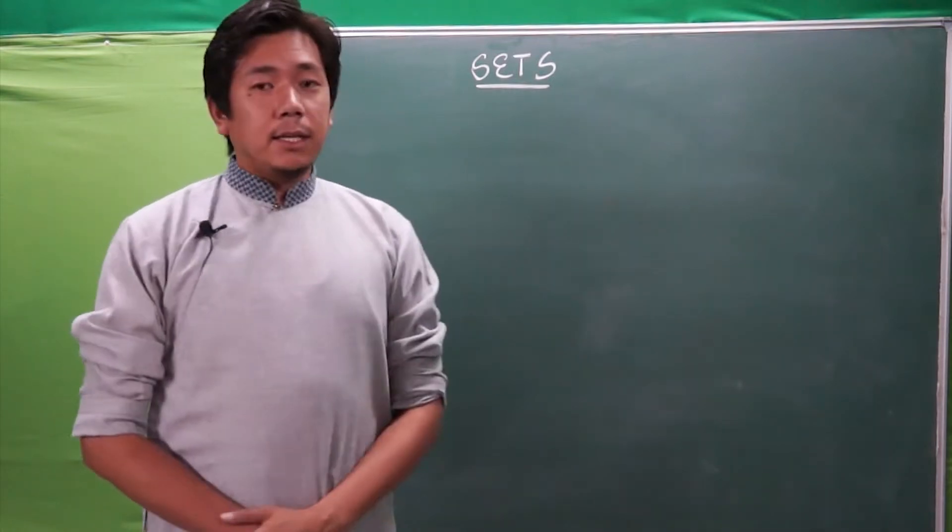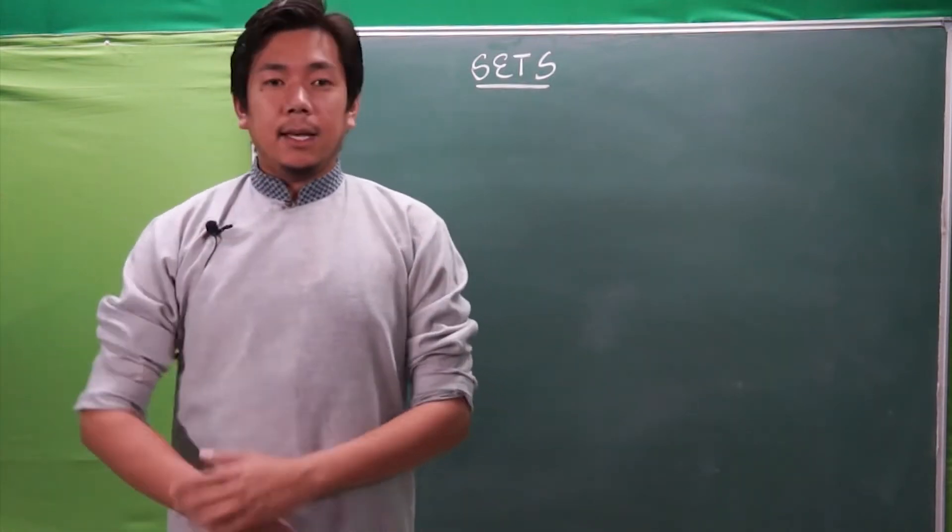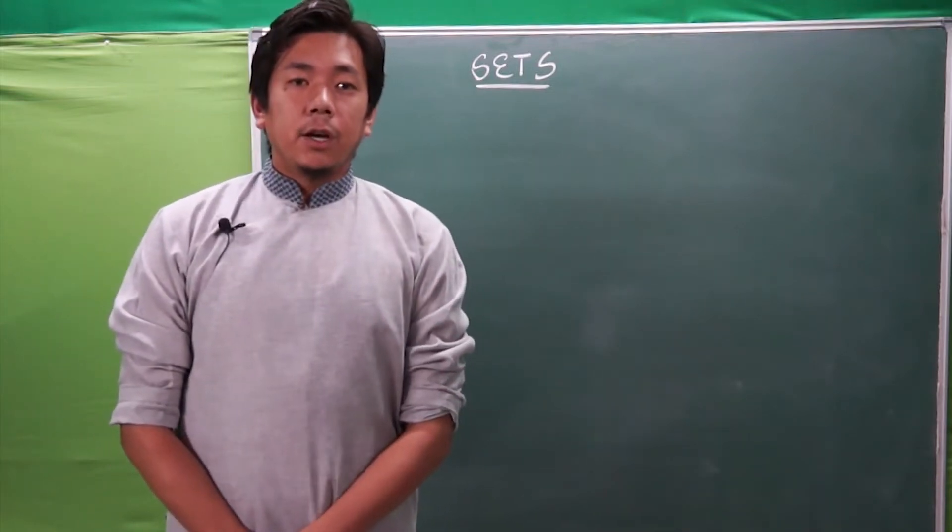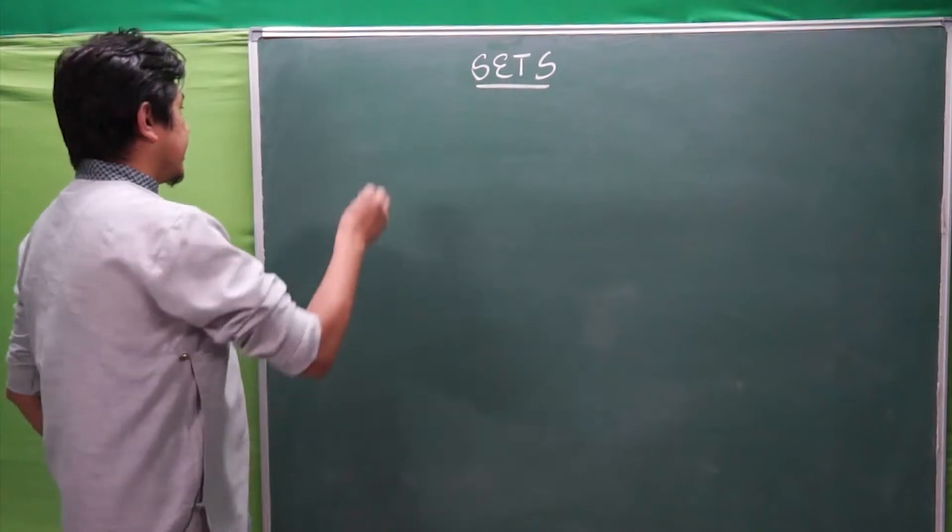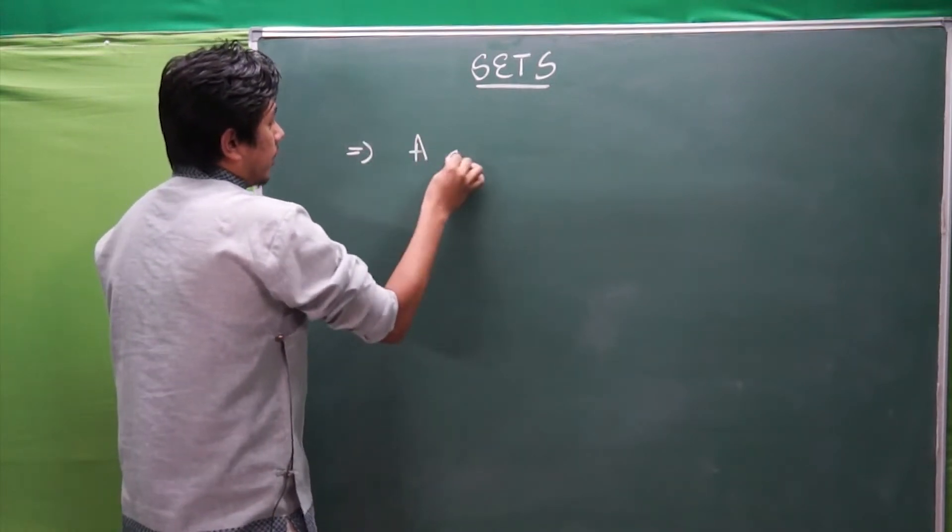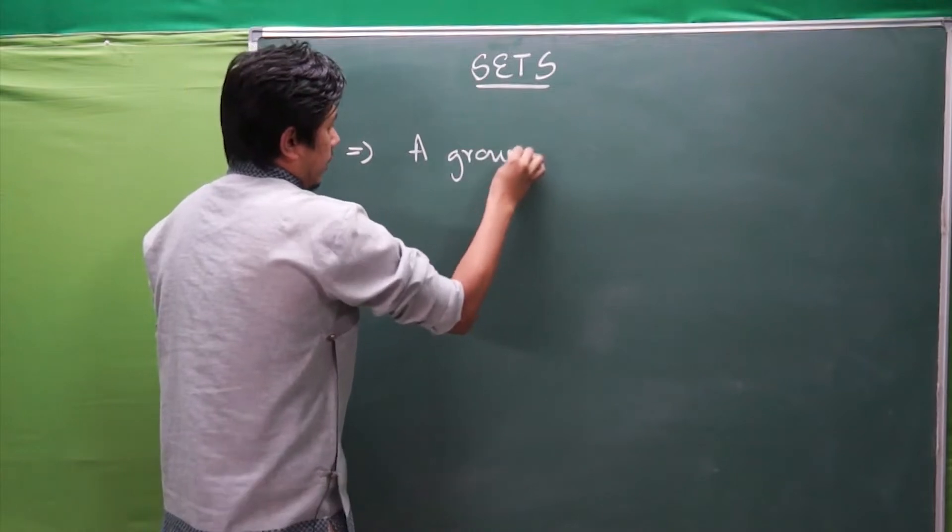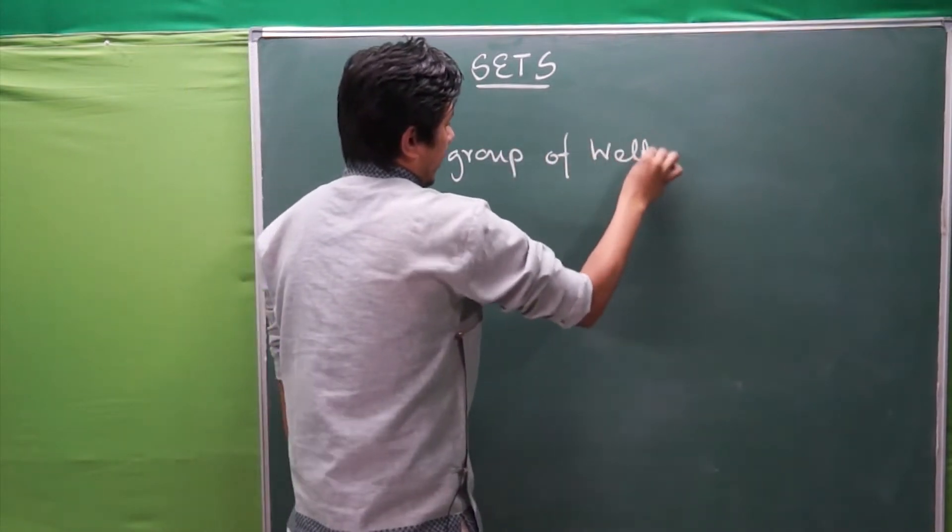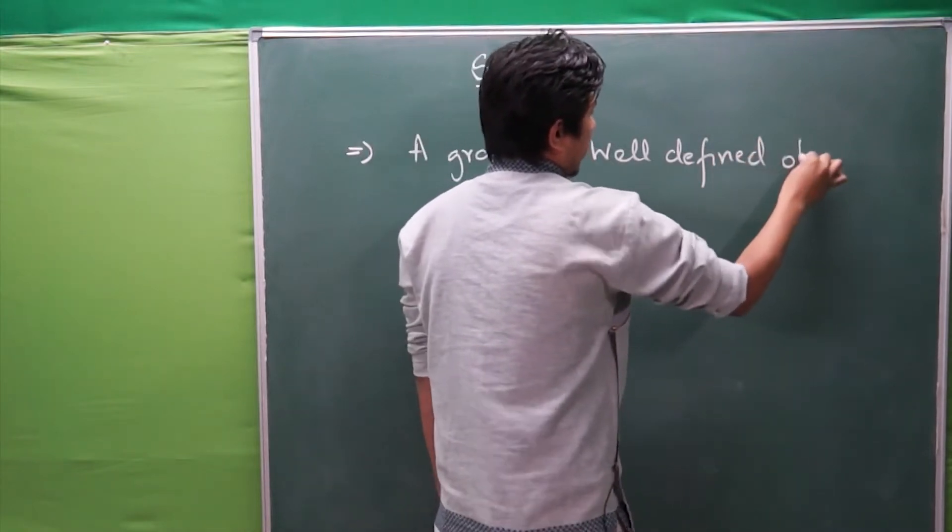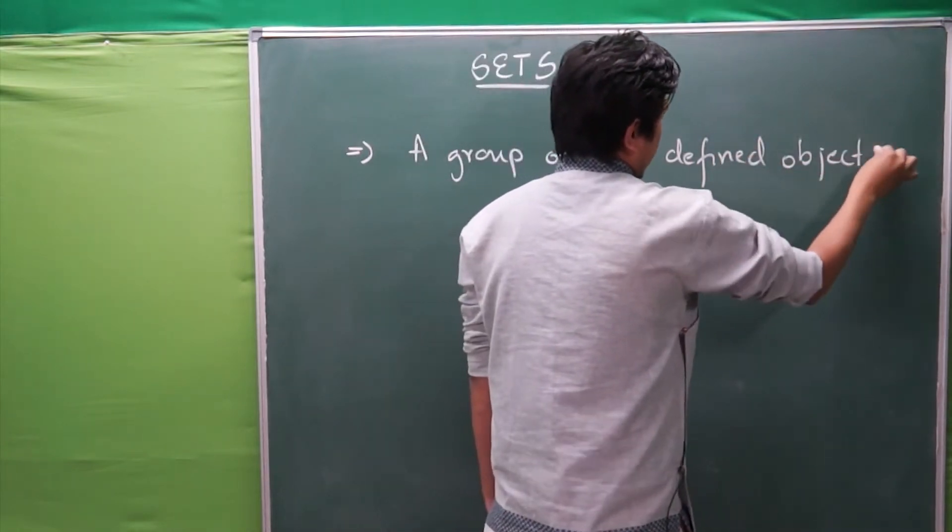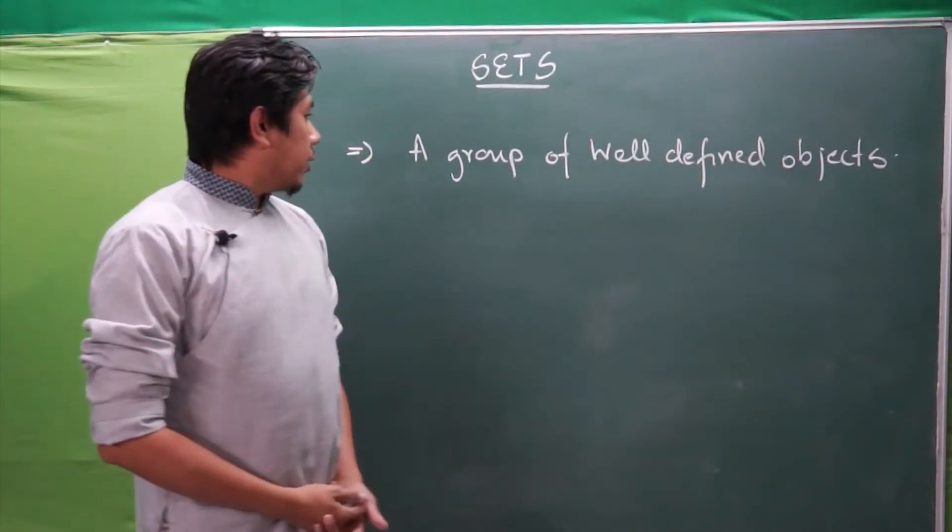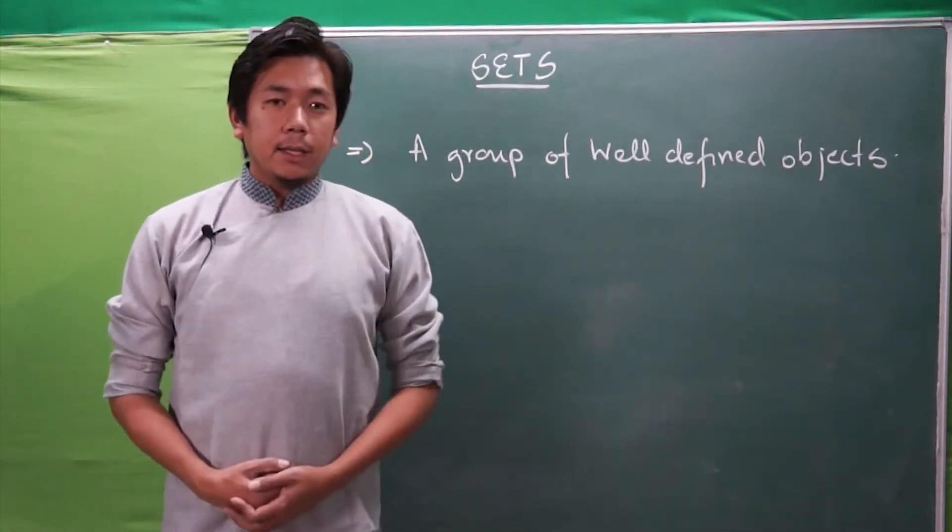So likewise in mathematics, if we place all numbers or data under certain defined conditions, then that group is known as set. Or to define sets, it is a group of well-defined objects.